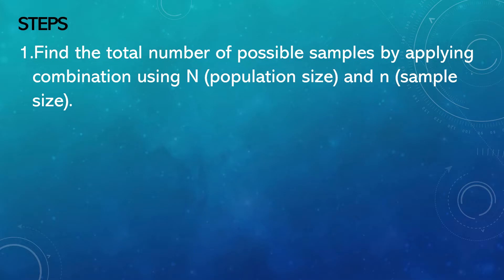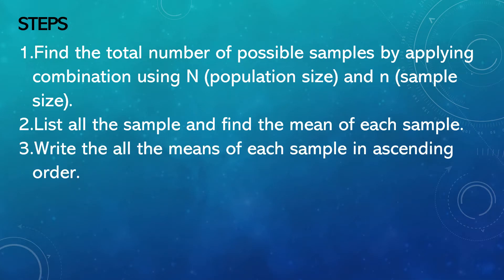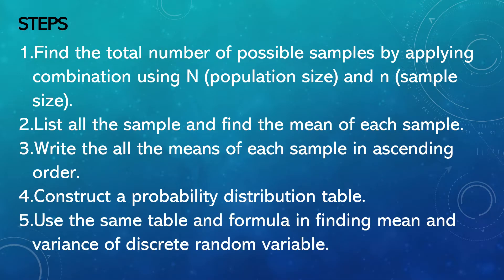First, we need to find the total number of possible samples by applying combination using capital letter N for population size and small letter n for sample size. Second, list all the samples and find the mean of each sample. Third, write all the means of each sample in ascending order. Fourth, construct a probability distribution table. And the last step: use the same table and formula in finding the mean and variance of a discrete random variable.